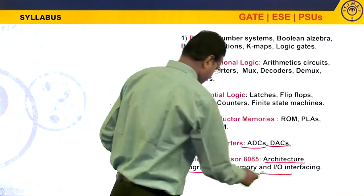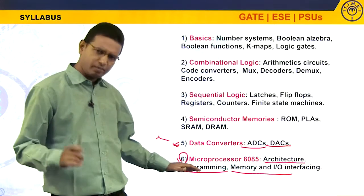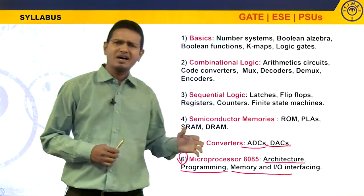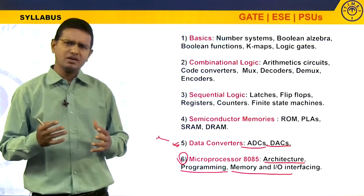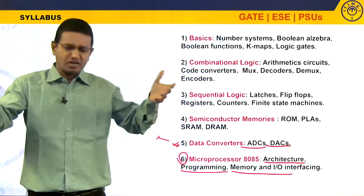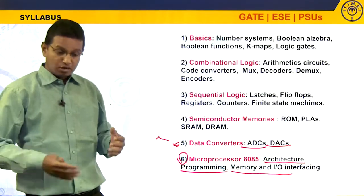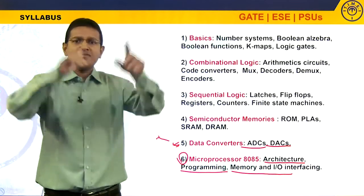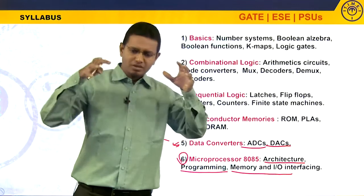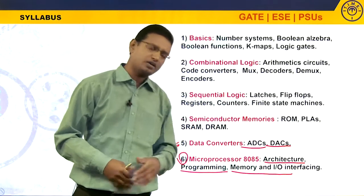Coming to the architecture — if you want to understand the remaining concepts of the microprocessor, you have to be very good at architecture. Architecture is basically nothing but how exactly a microprocessor looks inside. If you cut open the chip, you will see nothing because everything is transistors. If you want to understand the operation, you should have an overview, and that overview is given by the architecture.